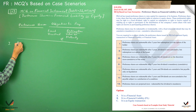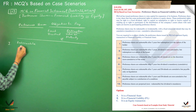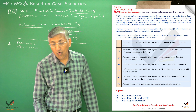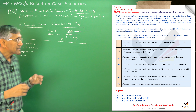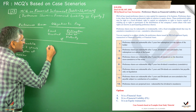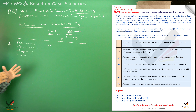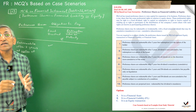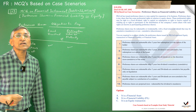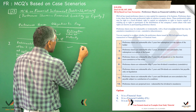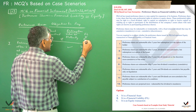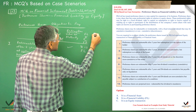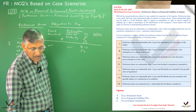In Case 1, the preference shares are redeemable after 5 years at the option of the holder — meaning the investor. In this case, the company has a fixed obligation to pay a dividend, and since redemption is the holder's option, the company is obligated to redeem. Therefore, this is a financial liability. The correct option is B.